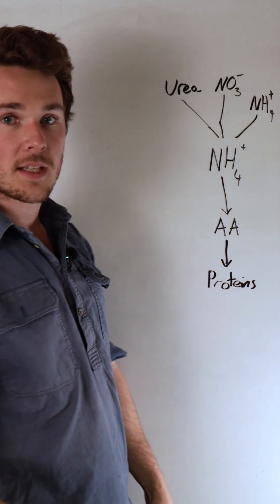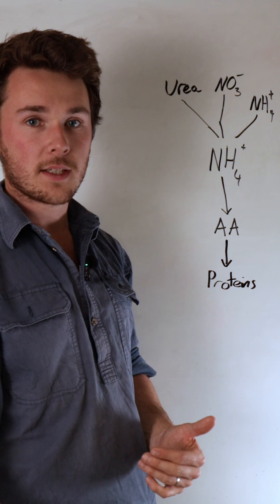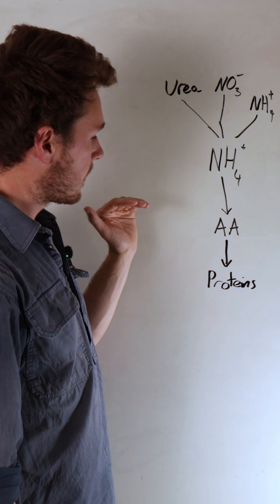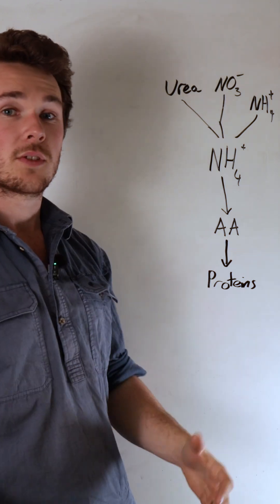From there, there's a few other steps that get converted into proteins, like the requirement of magnesium in the ribosome. But overall, it's getting the nitrogen into amino acids which is the tricky part,